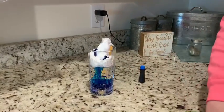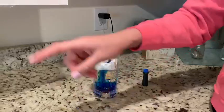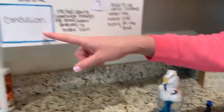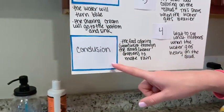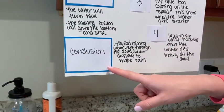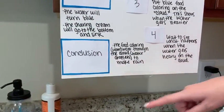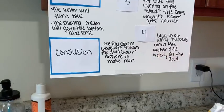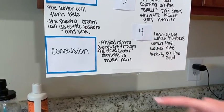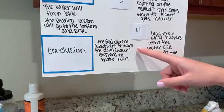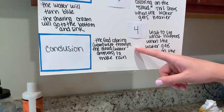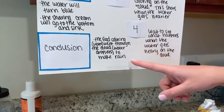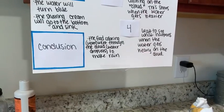Our conclusion is the last step of our experiment. The food coloring — water — went through the cloud, through the water droplets, to make rain.